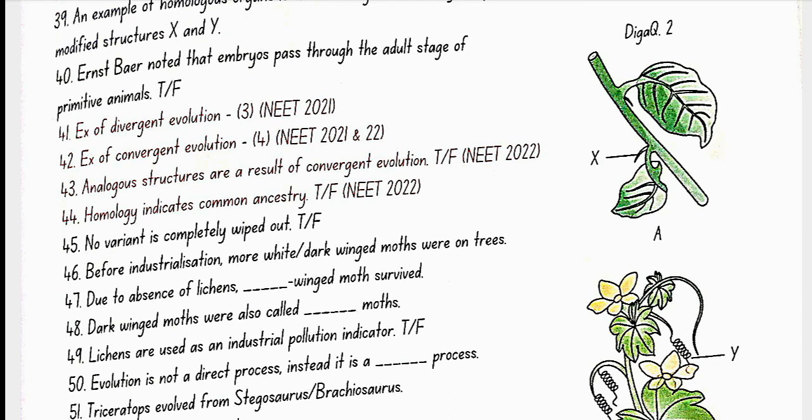Before industrialization, more white-winged moths were on trees. Due to absence of lichens, dark-winged moths survived. Dark-winged moths were also called melanized moths. Lichens are used as an industrial pollution indicator. Yes, true. Evolution is not a direct process. Instead, it is a stochastic process.